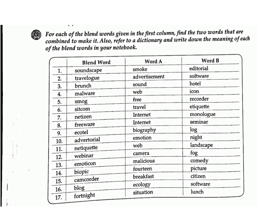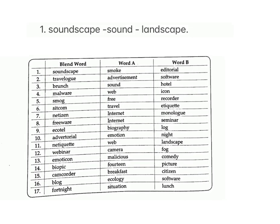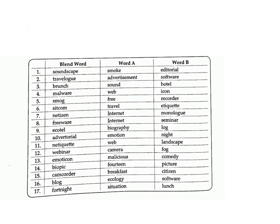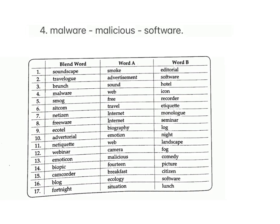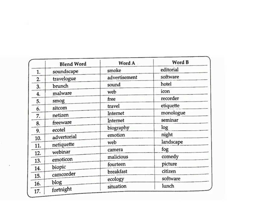G: for each of the blend words given in the first column, find the two words that are combined to make it. Also refer to a dictionary and write down the meaning of each blend word in your notebook. 1. soundscape – sound + landscape; 2. travelog – travel + monologue; 3. brunch – breakfast + lunch; 4. malware – malicious + software; 5. smog – smoke + fog.